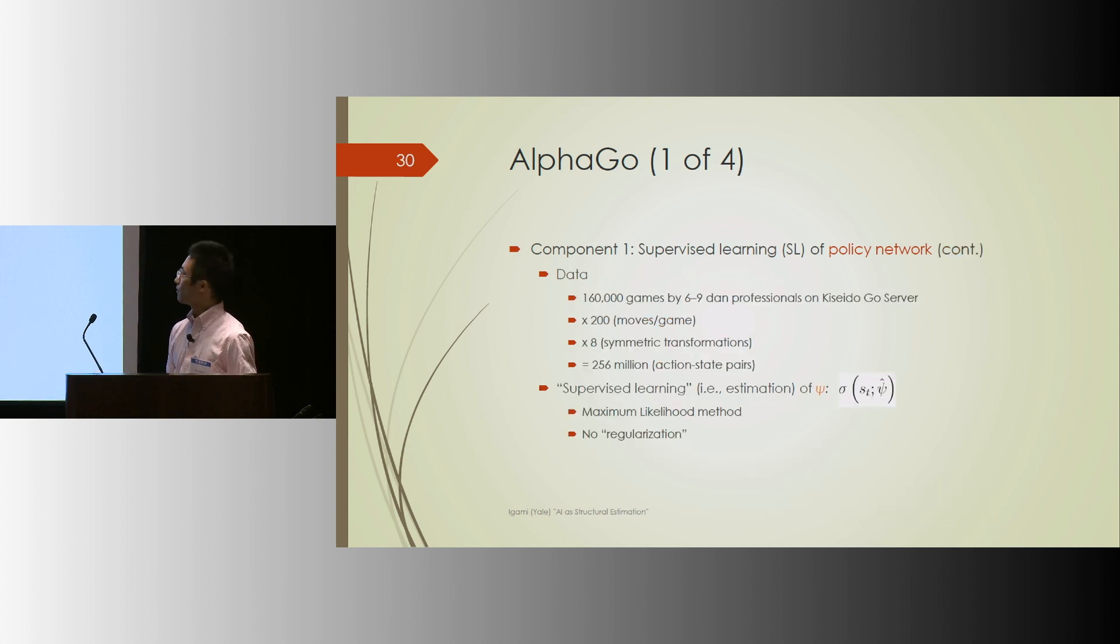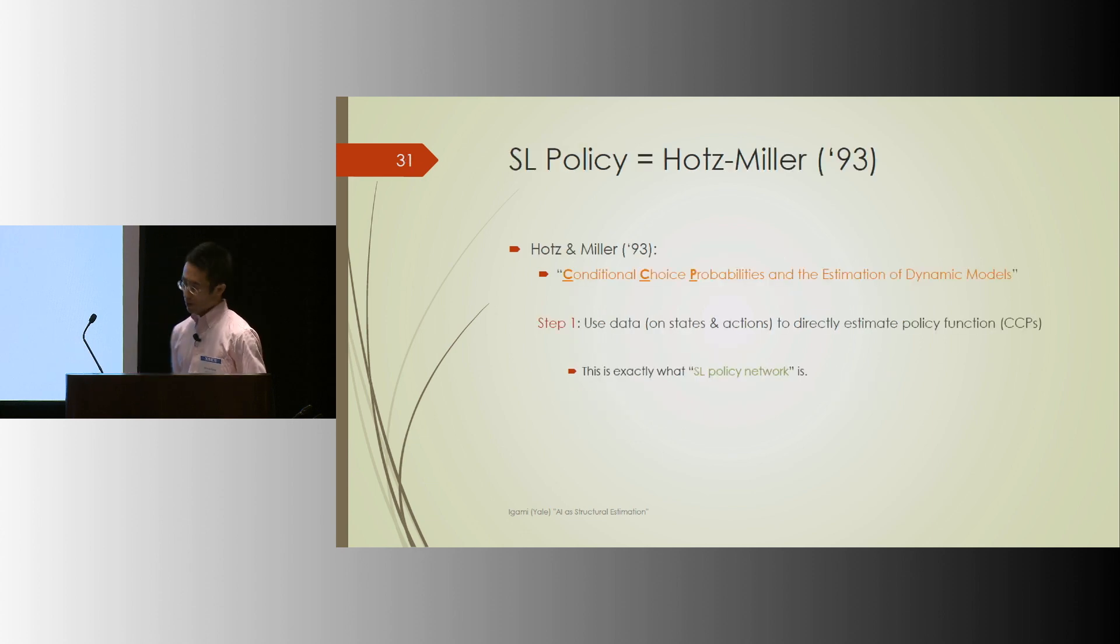This part of AlphaGo used the data of professional players, which had about 256 million action state pairs as a training set, and used supervised learning with maximum likelihood.